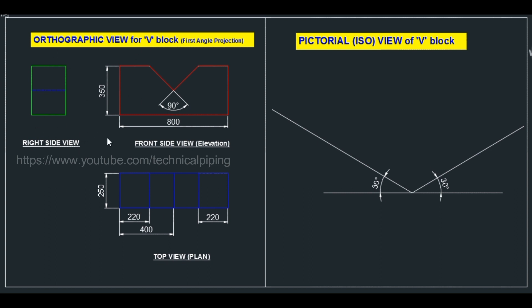This is the right side view, this one is the front side view (elevation), and this one is the top view. They have given all dimensions - length, width, height, and everything. From this orthographic view, we have to draw the isometric view or assembling view.